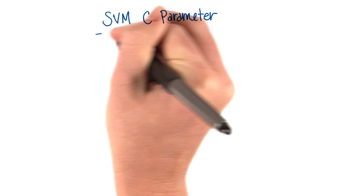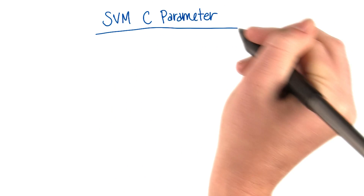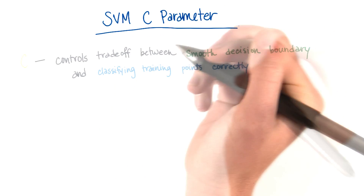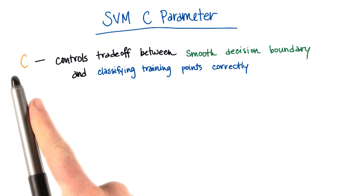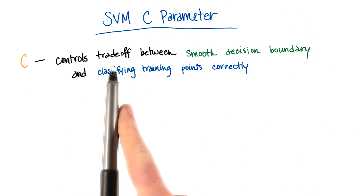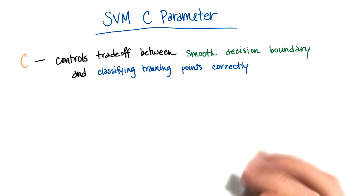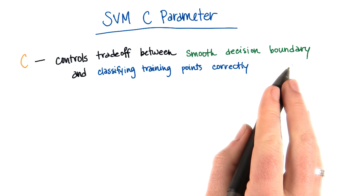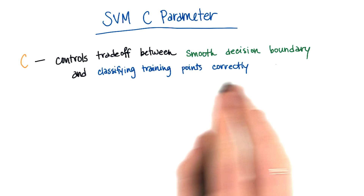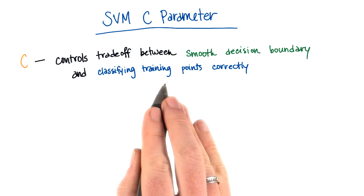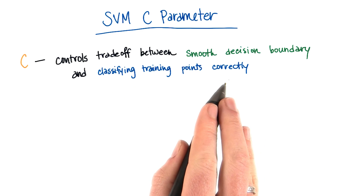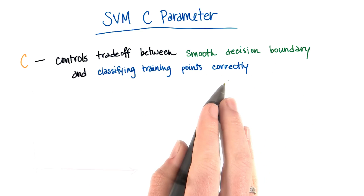The other important parameter for an SVM is the C parameter. What does C do? It controls the tradeoff between a smooth decision boundary and one that classifies all the training points correctly.